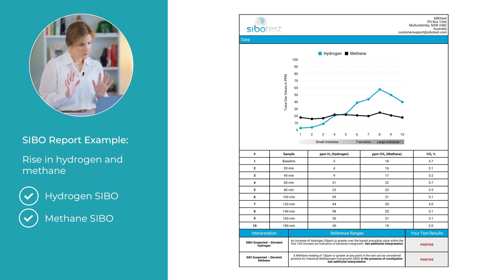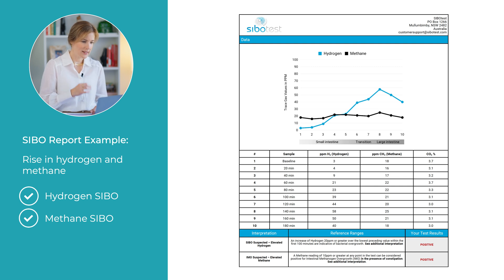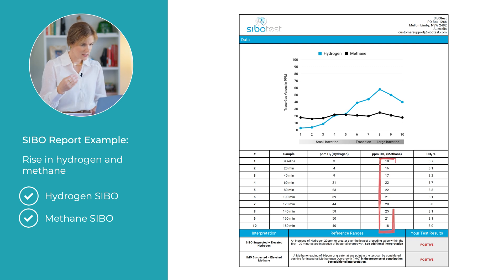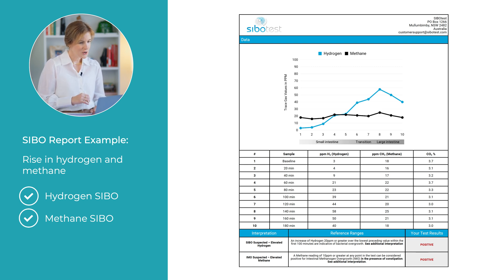For methane, a result of 10 parts per million or more at any point is indicative of SIBO. Methane-producing archaea slow down intestinal transit time, which we need to take into account when looking at a client's lab results. This report shows a baseline methane of 18 parts per million and it stays around this level for the full three-hour testing period.